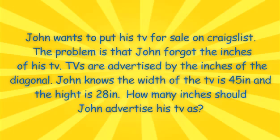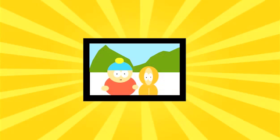John wants to put his TV for sale on Craigslist. The only problem is that John forgot the inches on his TV. TVs are advertised by the inches of the diagonal. John knows the width of the TV is 45 inches, and the height is 28. How many inches should John advertise his TV as?